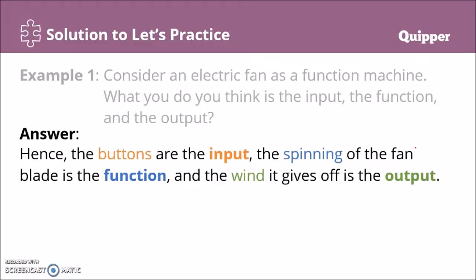So if you press on one, that's the input — the spinning of the fan blade depends on the input. Kung one lang siya, it's at minimum level, so the spin of the fan is minimum, and the output — the wind it gives off — will also be at minimum. But if you press on three, that's the maximum input. The spinning will be very strong, and the wind it gives off will also be at maximum output. So the wind it gives off depends on the buttons that you press, and the buttons are considered as the input.